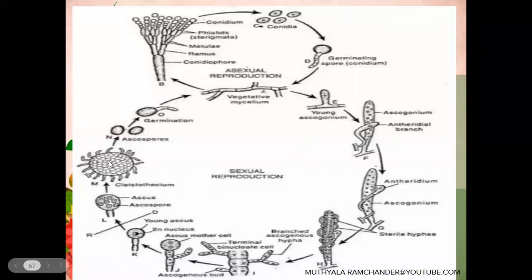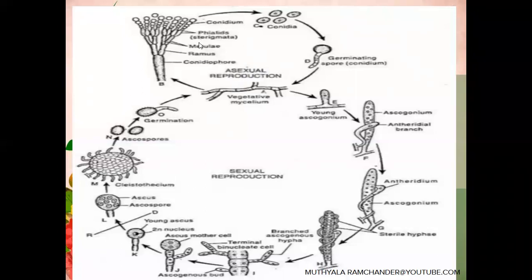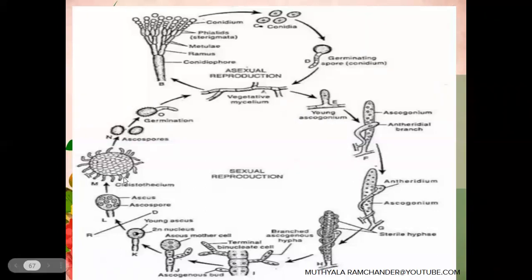Inside the Cleistothecium, Ascogenous filaments, Ascogonium, sterile Antheridium, and Ascospores are present. At the matured stage, the pulley-wheeled Ascospores come out from the Cleistothecium, absorb moisture, and germinate into new vegetative mycelium. The new vegetative mycelium again participates in asexual reproduction during favorable conditions, and in unfavorable conditions produces sexual reproductive organs like Ascogonium and Antheridium — a continuation of the life cycle of Penicillium.